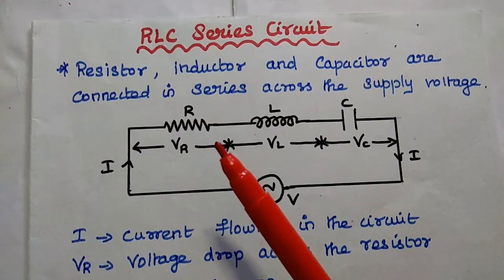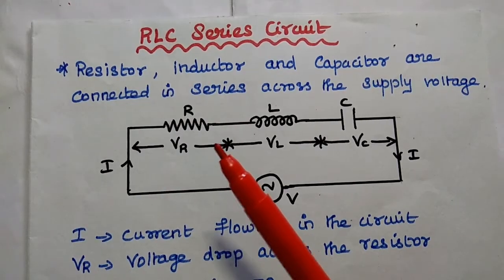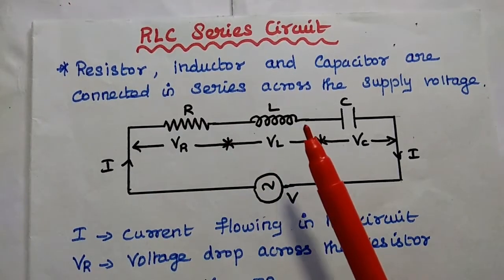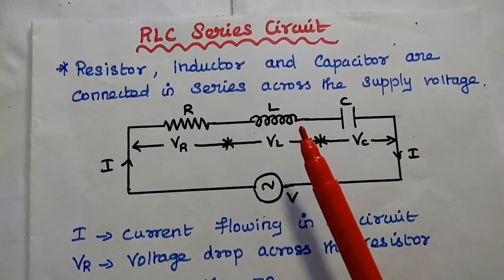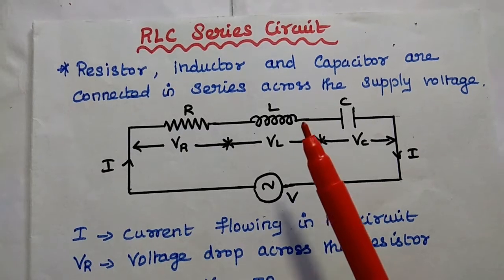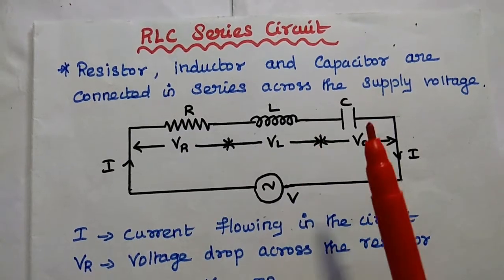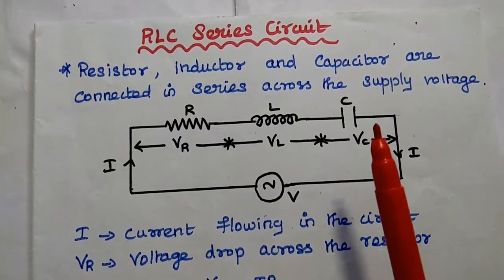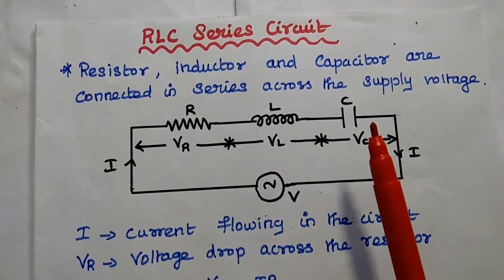Here R represents the resistance value with the unit Ohm, L is the inductance value with the unit Henry, and C is the capacitance value with the unit Farad.